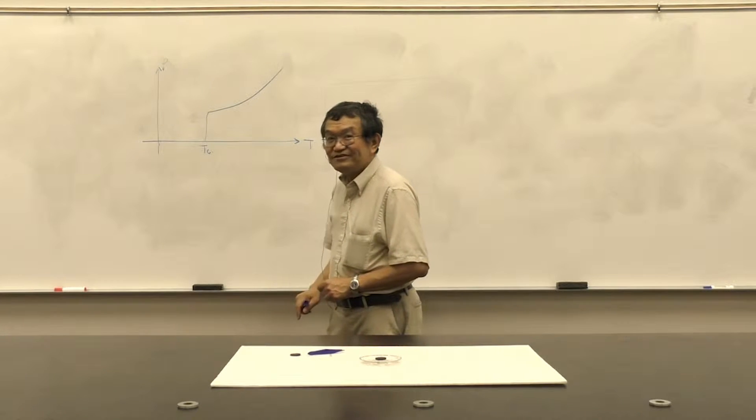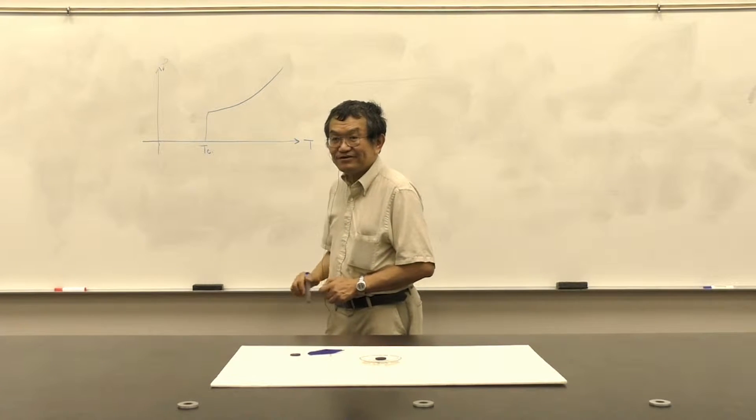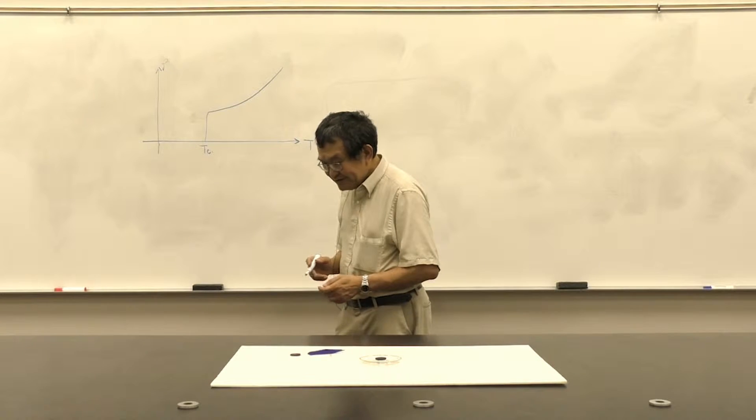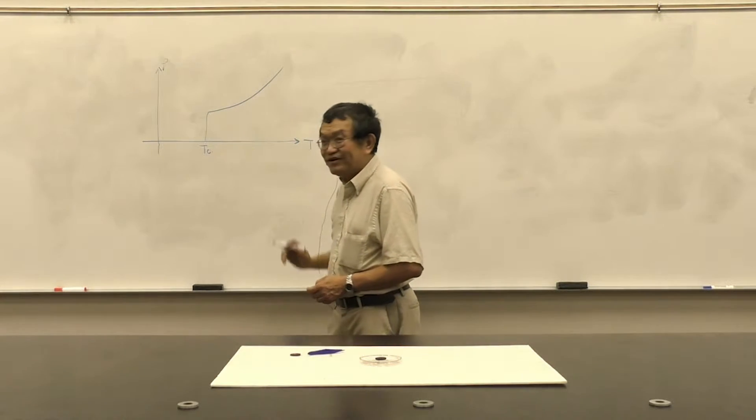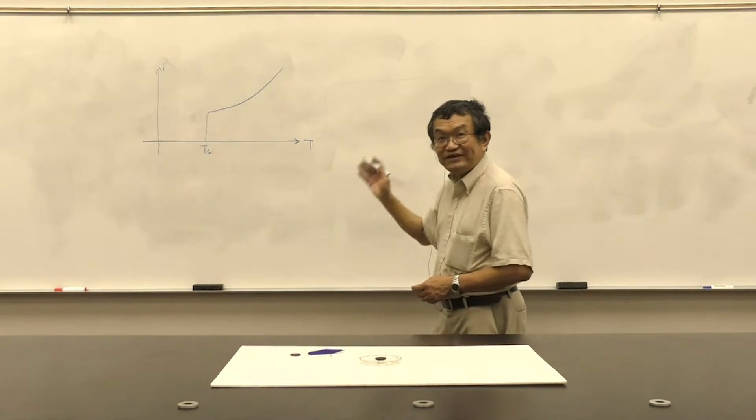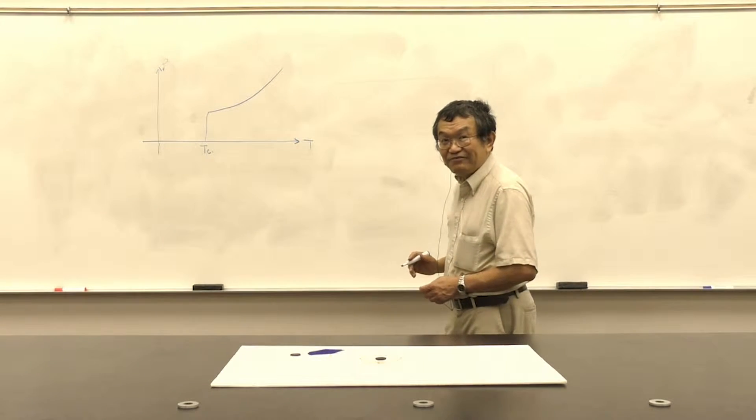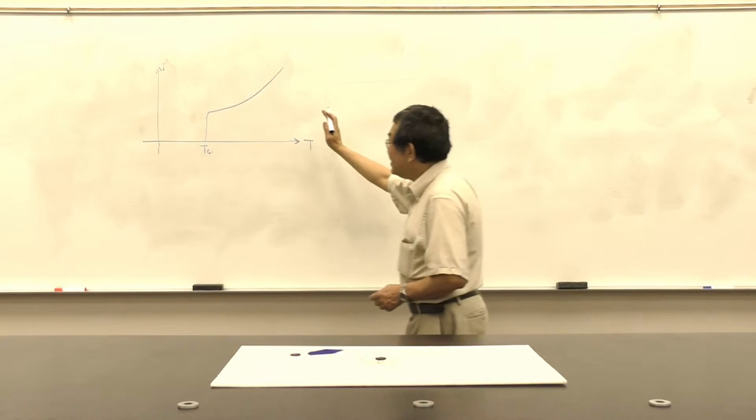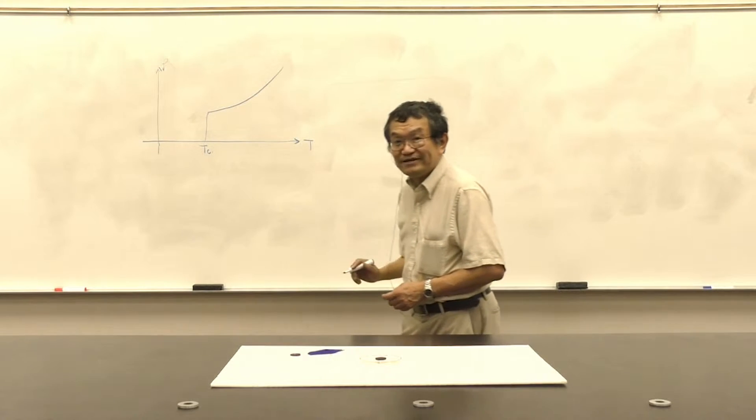And this critical temperature depends on the materials of the superconductor. Besides this interesting phenomenon, there is another phenomenon we call perfect diamagnetism that will occur at the same time when the material is becoming superconducting.